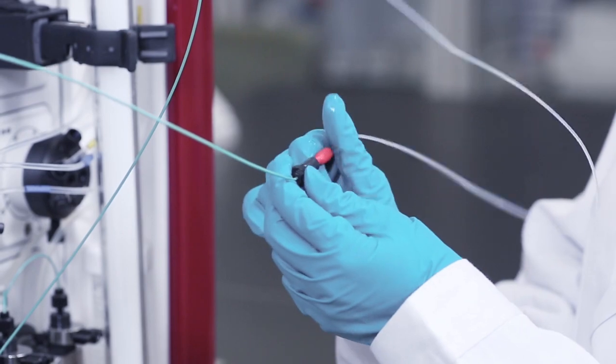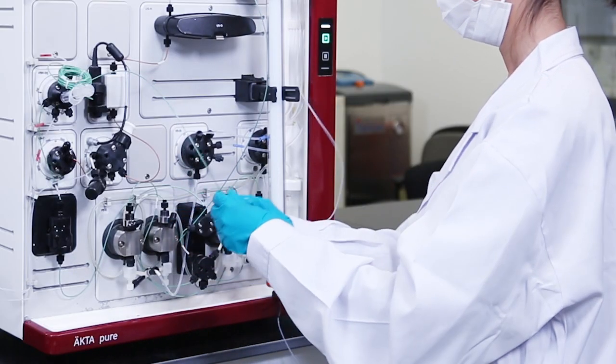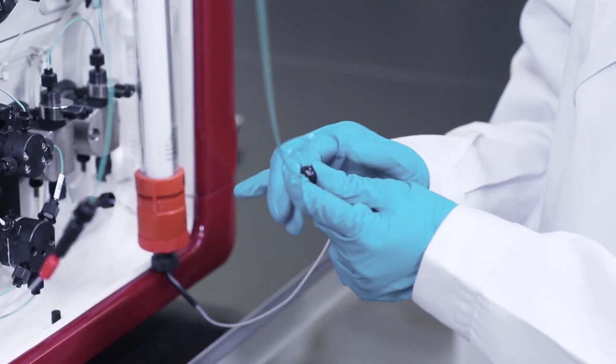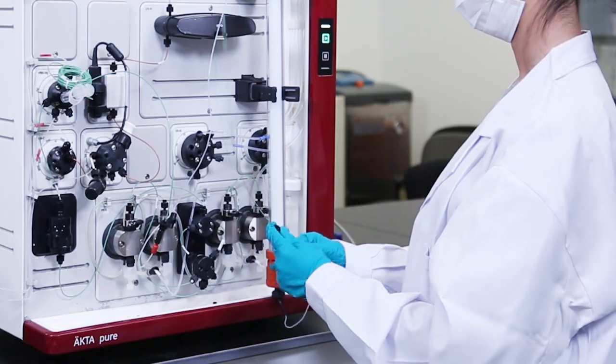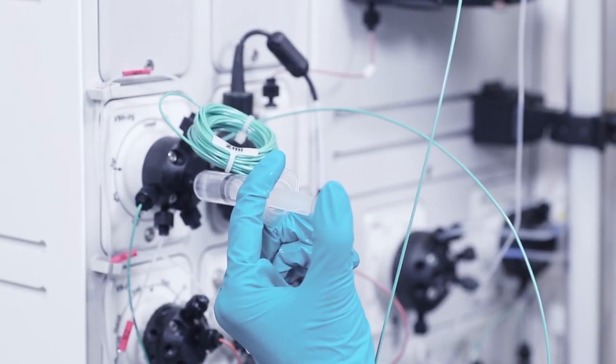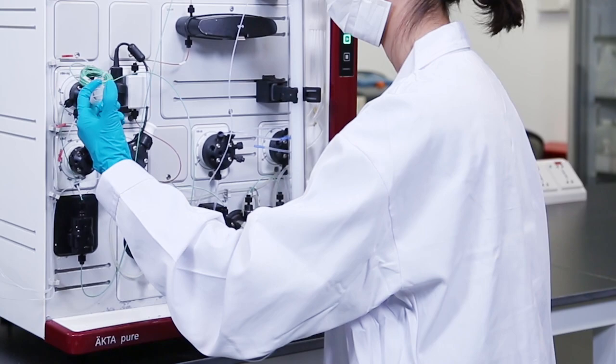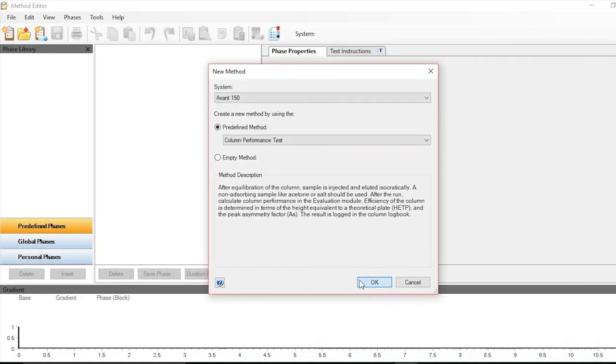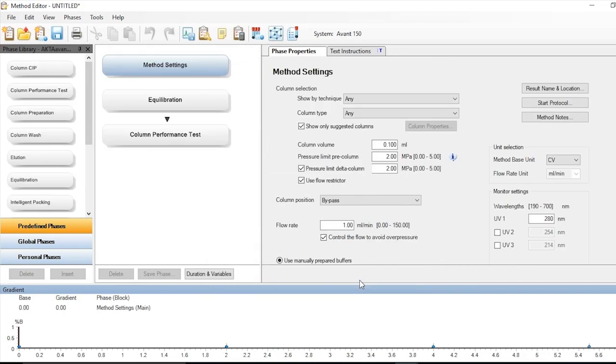Mount the column to the system and make a drop-to-drop connection. Use a syringe to inject the sample to the sample loop. In Method Editor, choose the column performance test template. Type in related parameters, such as pre-column and delta pressure limit according to relevant column and resin, inlet of buffer, flow rate, volume of equilibration, and volume of sample application.